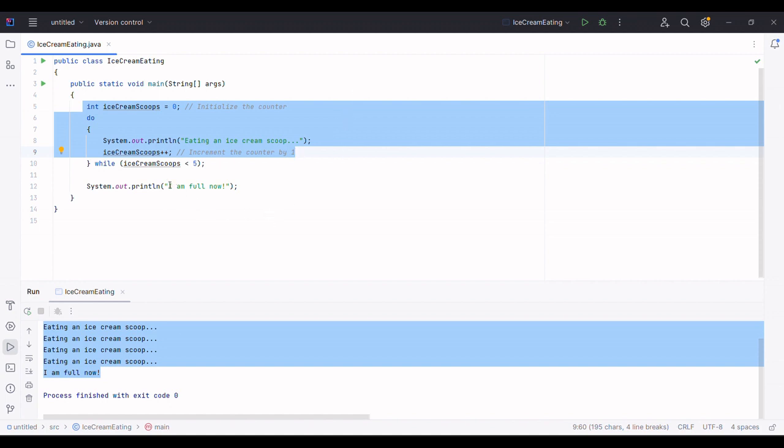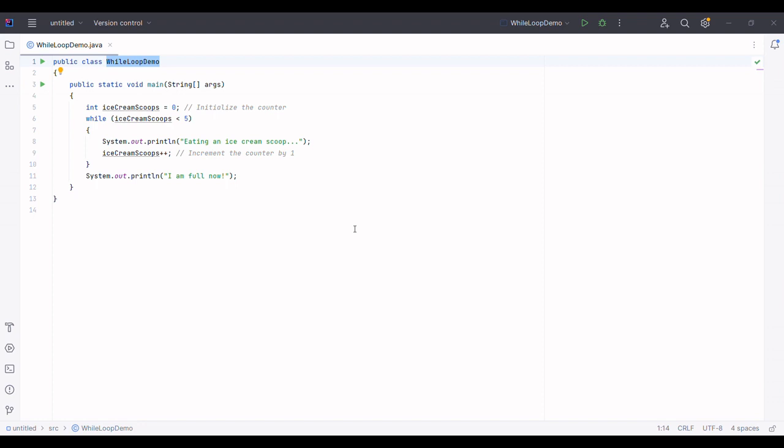Now let's see how we can use a while loop to eat some ice cream scoops. In this while loop we initialize a variable called ice cream scoops to zero, then we use the while loop to check if the ice cream scoops is less than five.